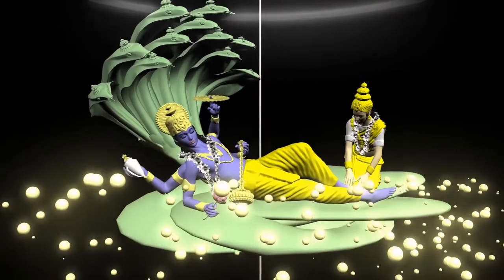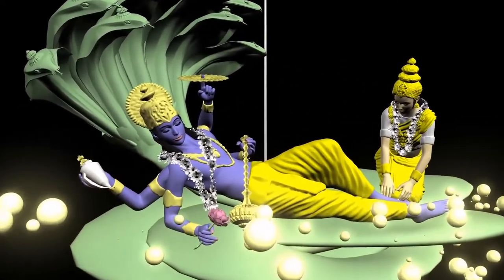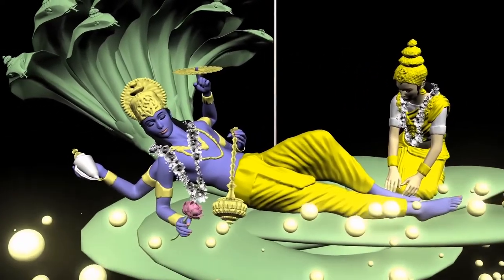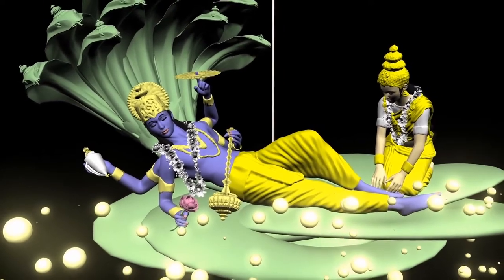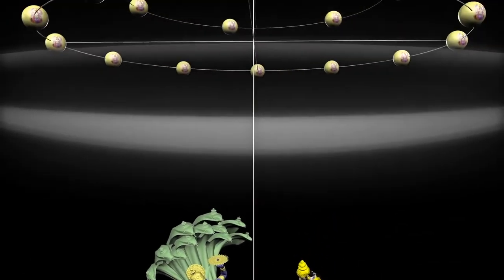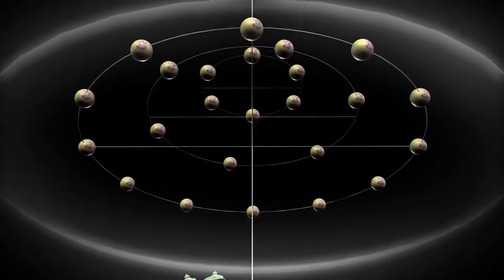Then we come to the Brahma Jyoti, the effulgence of the Lord's transcendental body. Penetrating through the Brahma Jyoti we come to the Vaikuntha planets. We're showing 24 planets of the Vaikuntha realm in this model.